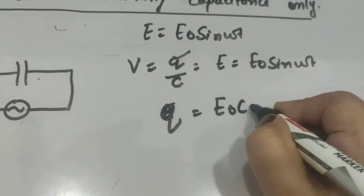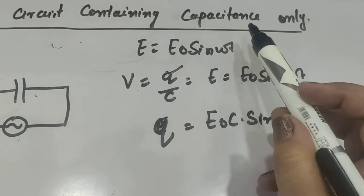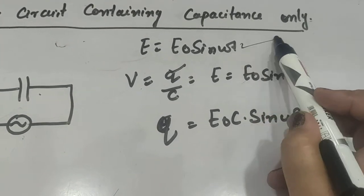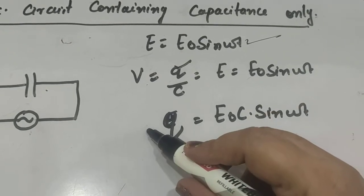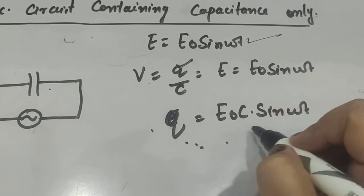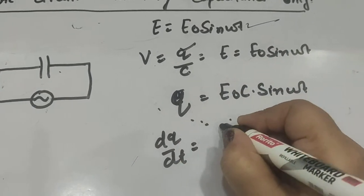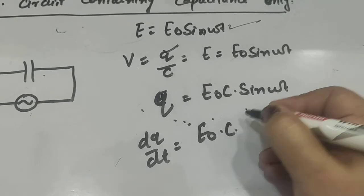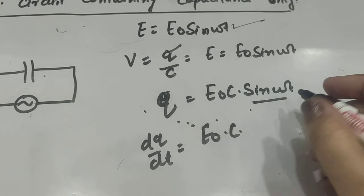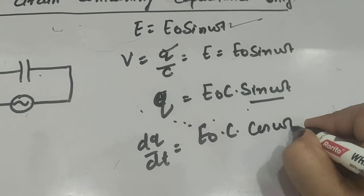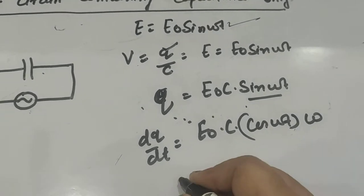Since we need to find out the phase relationship between voltage and current, we need to find out the current. Since charge is given, current can be found by differentiating both sides. So dQ/dt = E₀C, differentiation of sine is cos, this is cos(ωt), and this ωt's differentiation is ω.